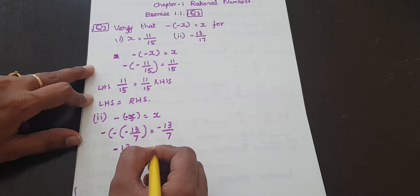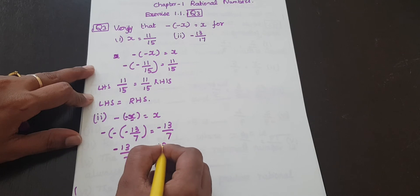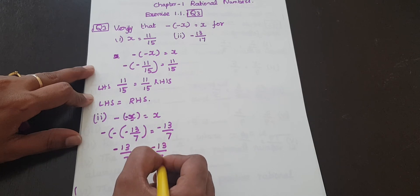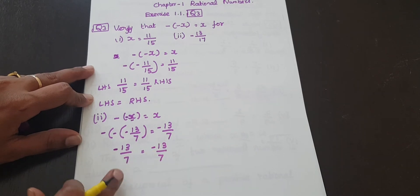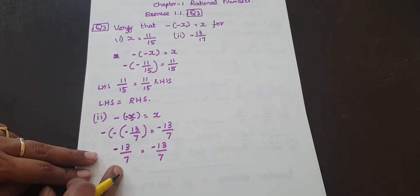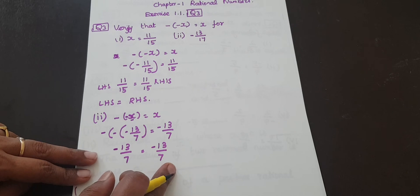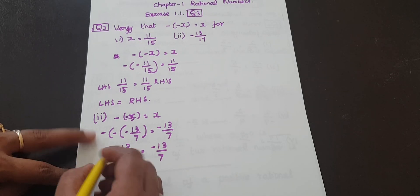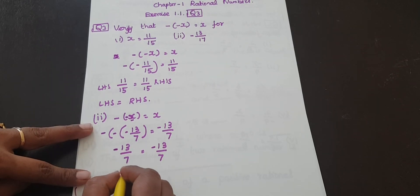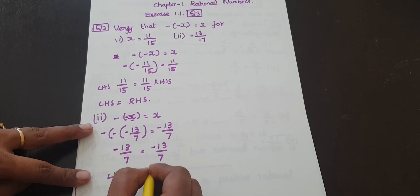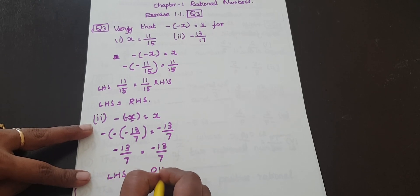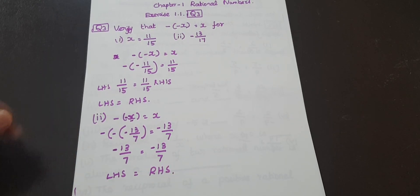So right hand side is minus 13 by 7. Left hand side is minus 13 by 7, right hand side is minus 13 by 7. So LHS is equal to RHS. Ok. Next, Question Number 4.